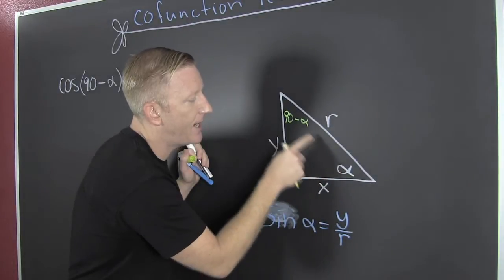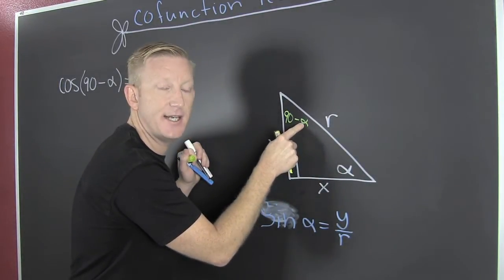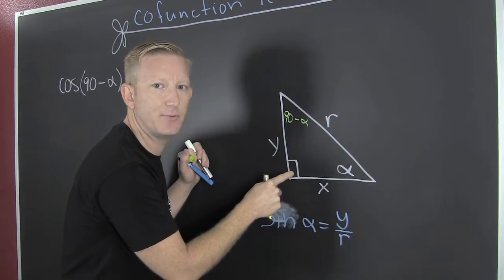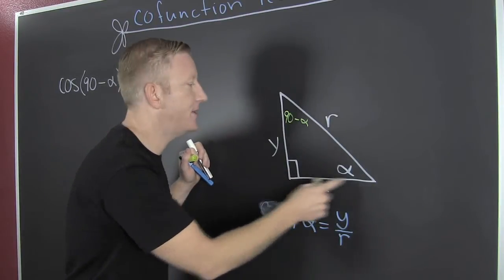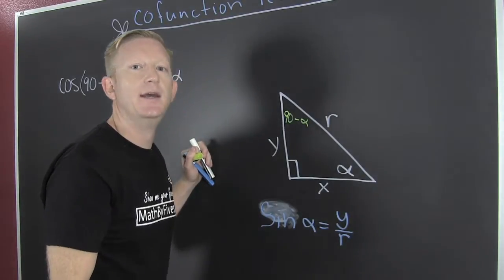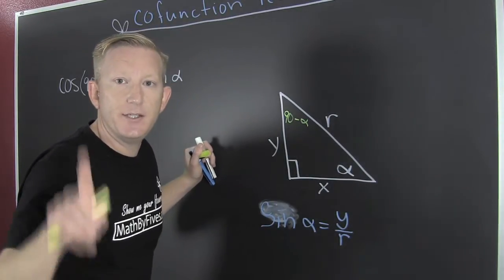Why? Because if I add alpha to this, I get 90 degrees. And the 90 degrees plus that 90 degrees is going to be 180 degrees. And we're going to satisfy the interior angles of that triangle adding up to be 180 degrees. Now,